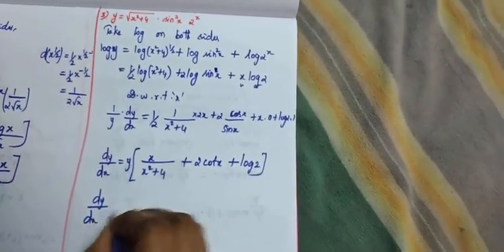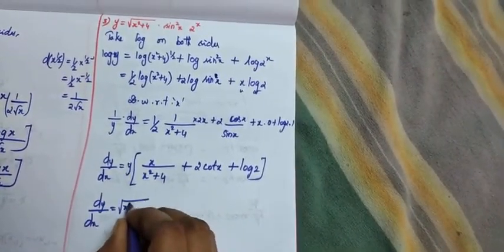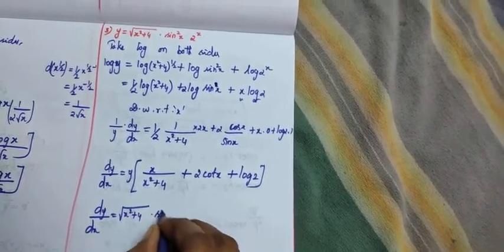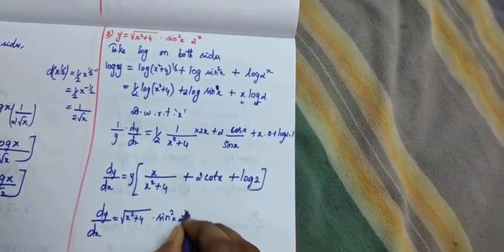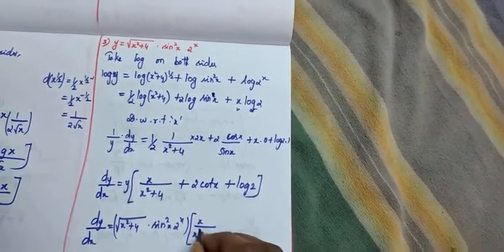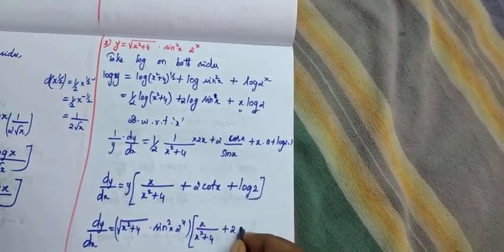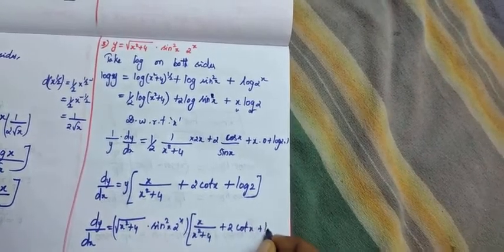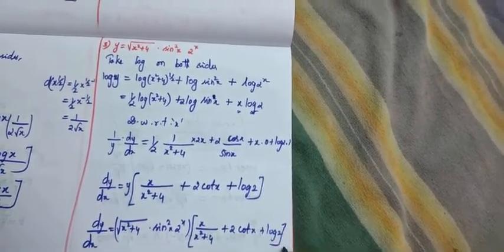dy by dx is equal to y is nothing but x squared plus 4, sin squared x, 2 power x, into x by x squared plus 4 plus 2 cot x plus log 2. This is our answer.